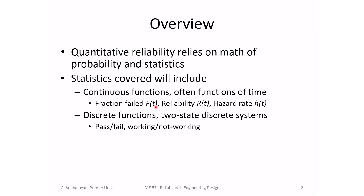These are all continuous functions of time. We will often treat time as the uncertain parameter — the same component tested multiple times gives different times to failure, so times to failure is the uncertainty. We will also study discrete functions, or two-state discrete systems: pass/fail, working/not working. We will do this primarily through binomial and Poisson distributions.